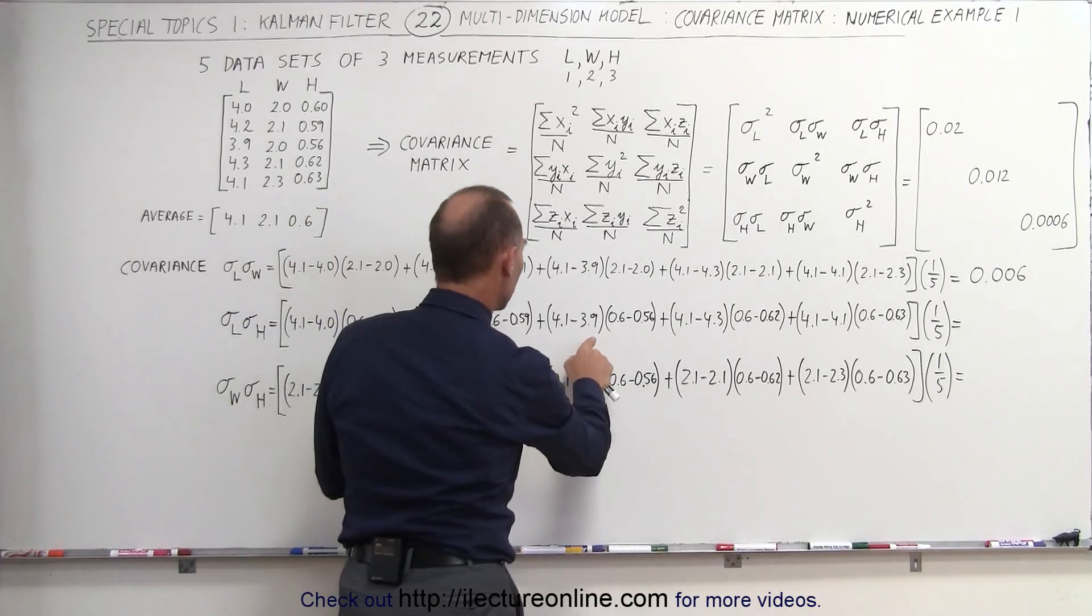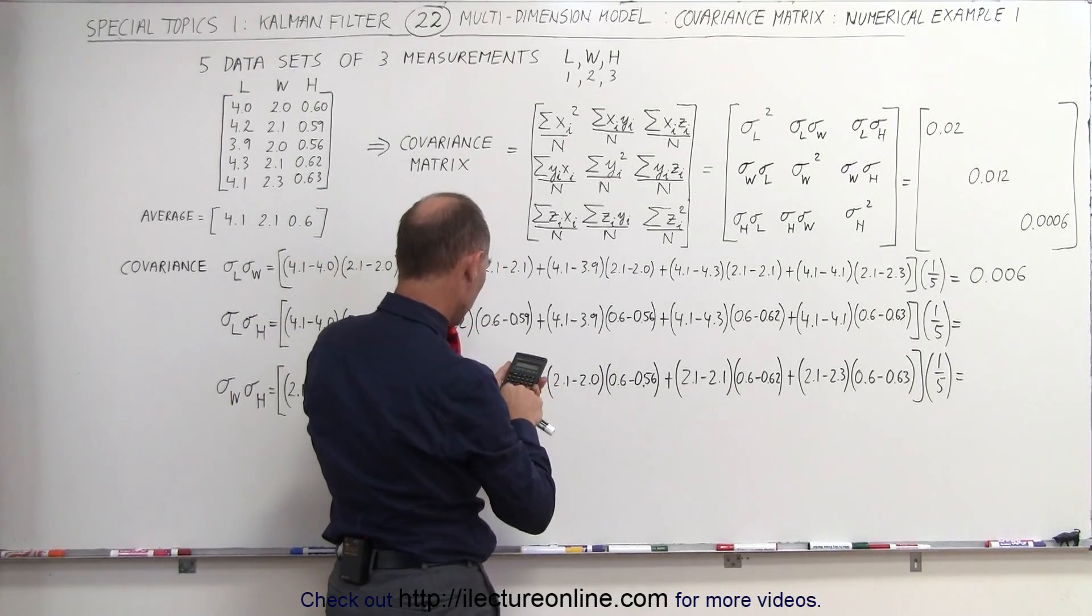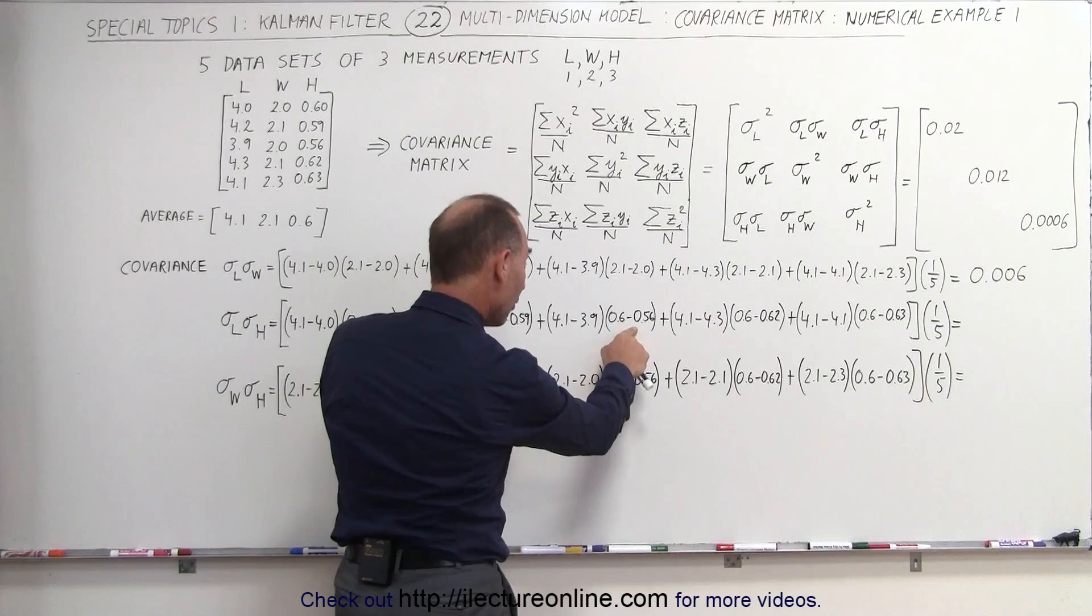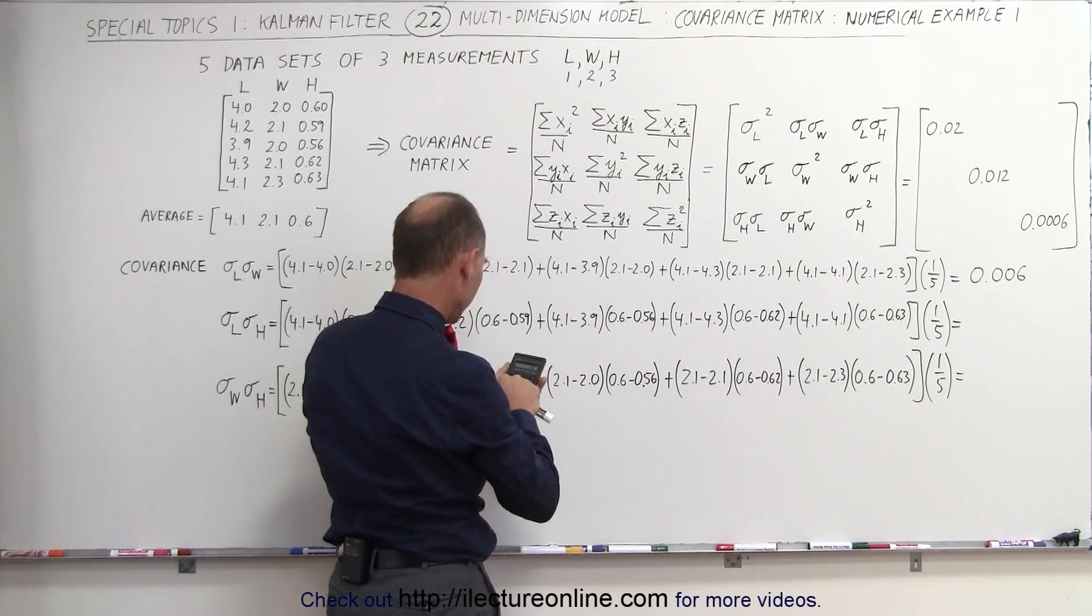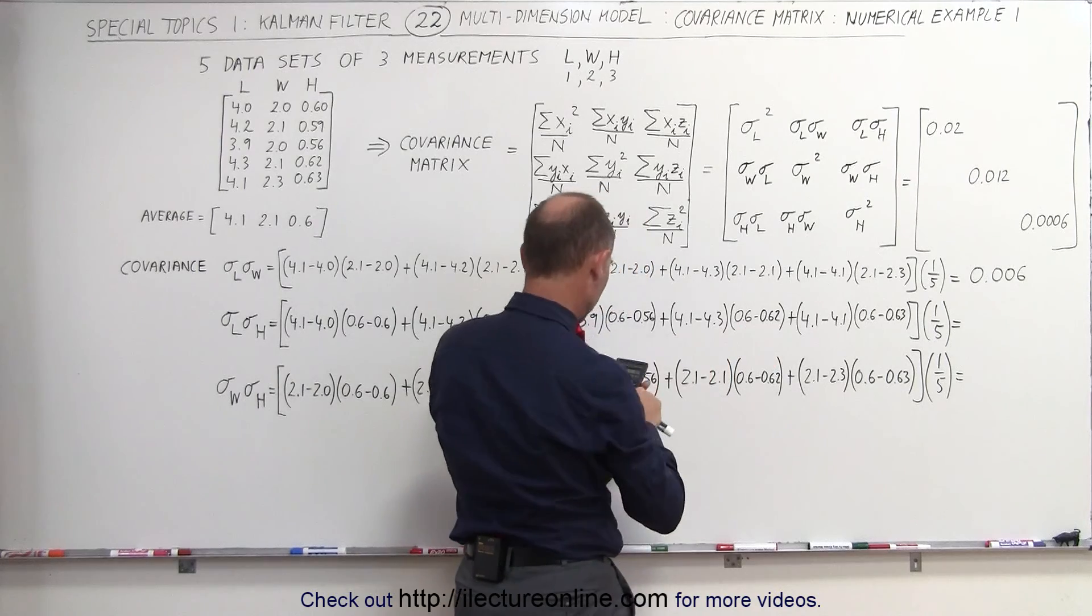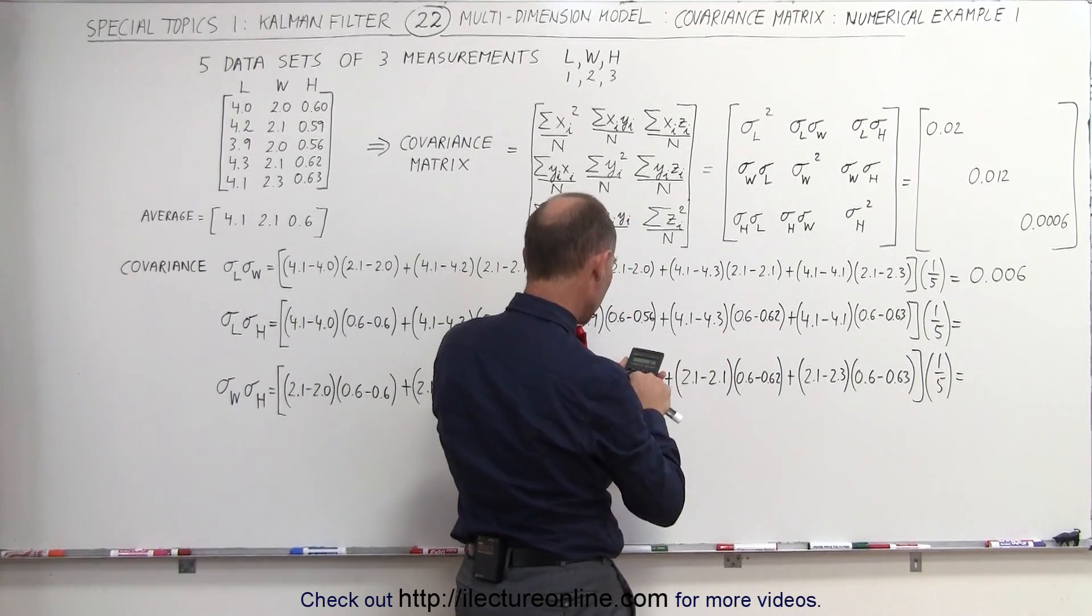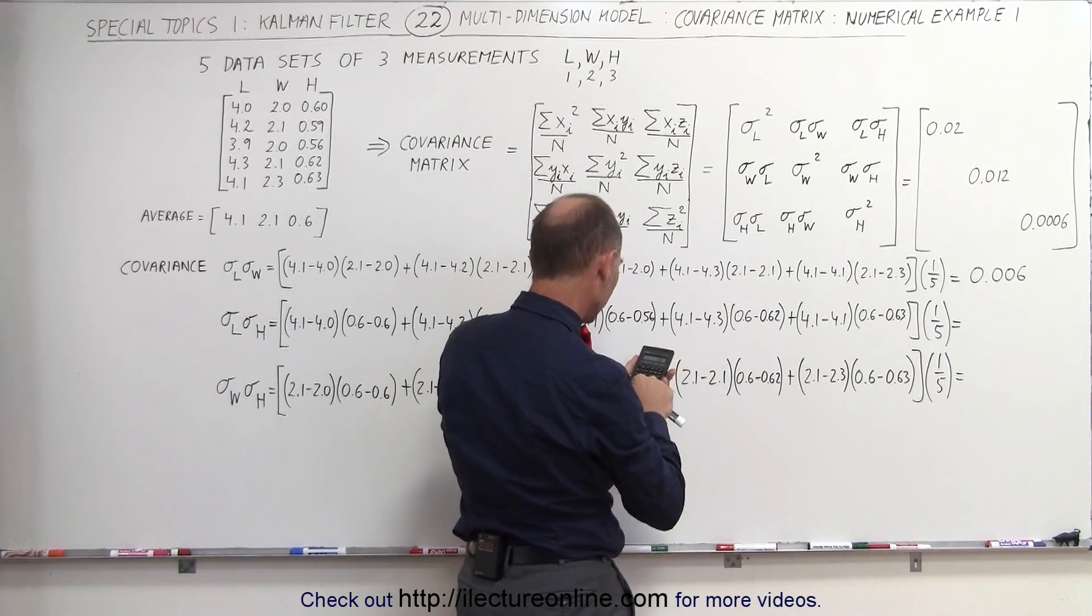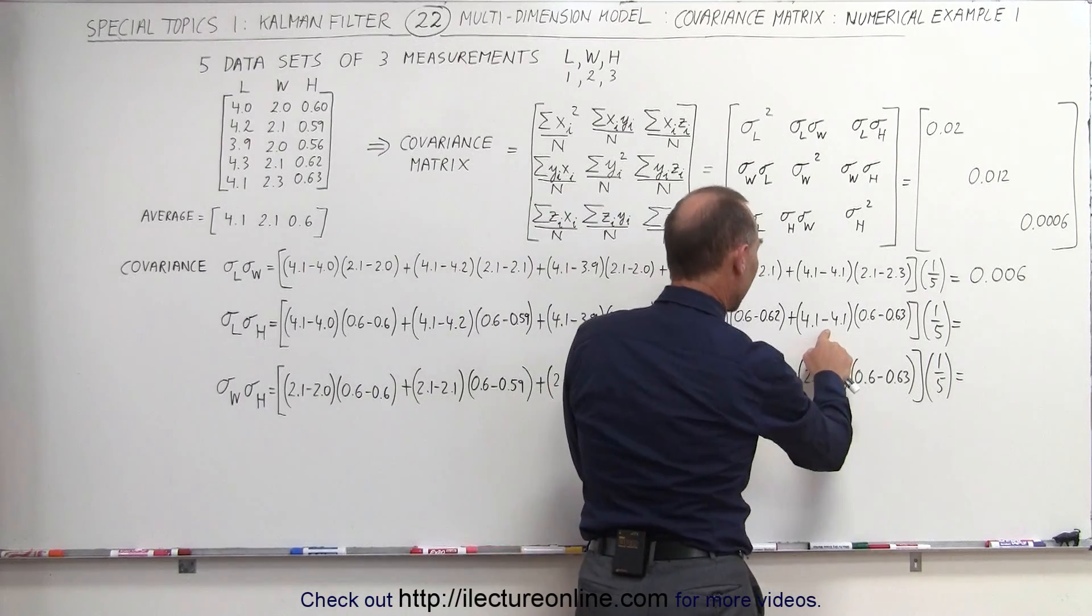We add that to 0.2 times 0.04. Here we add that to 0.2 times 0.02, and this would be 0.